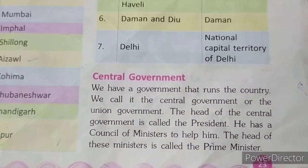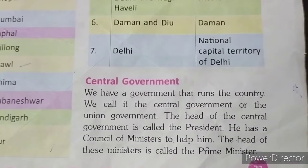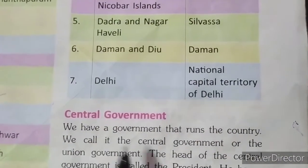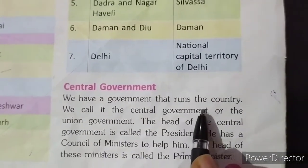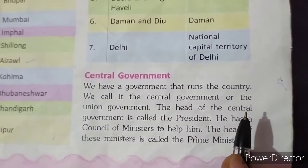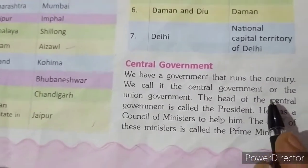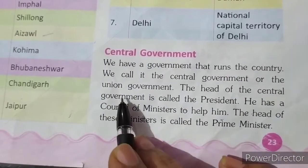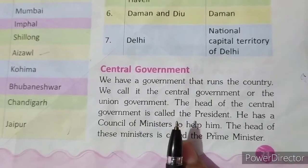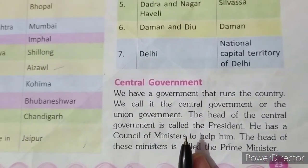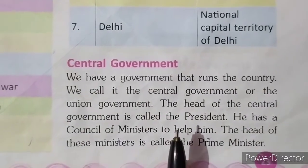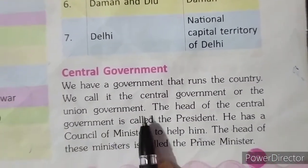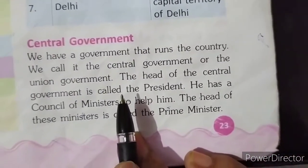Look in your books, page number 23. First, we have central government. We have a government that runs the country. We call it the central government or the union government. यह हमारे देश को चलाने वाली government है — this is the government that runs our country.